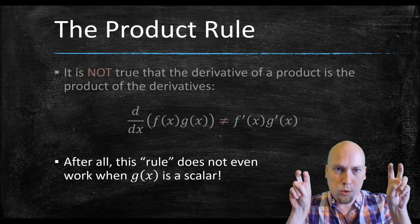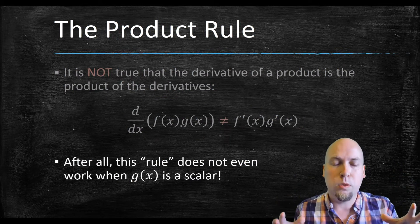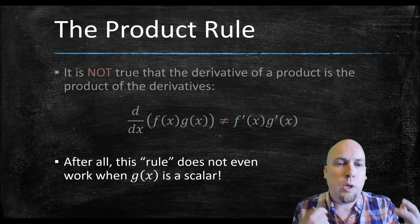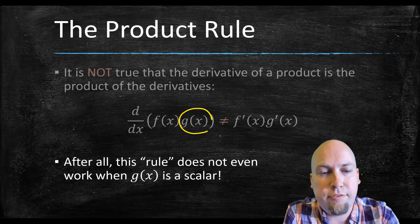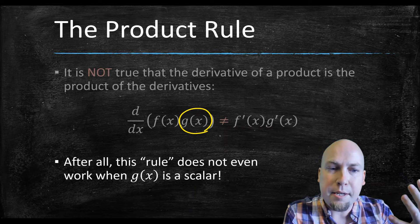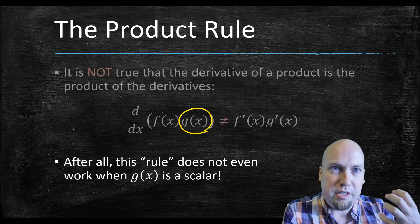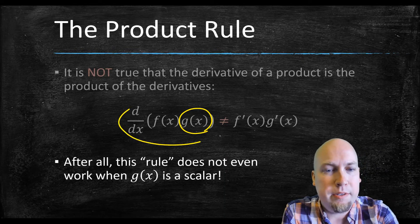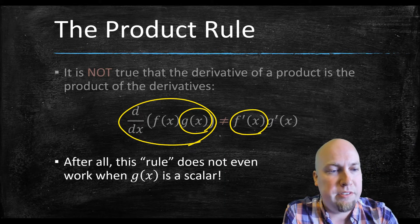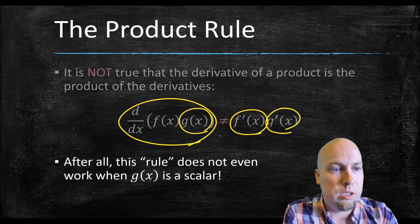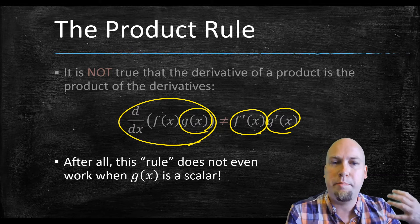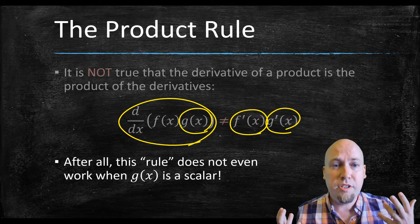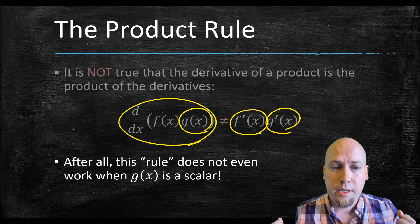This fake rule doesn't even work if one of the functions is a scalar. Imagine g was always equal to a constant c — the derivative of a scalar function is zero. So the fake rule would say the derivative of the product equals the derivative of f times zero, making the whole thing zero. But we know that's not true — we know we can pull scalars out of the derivative.